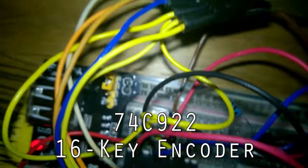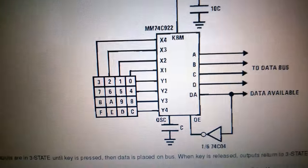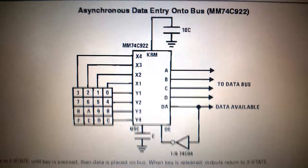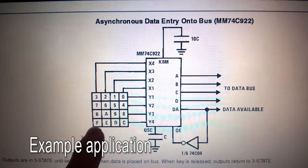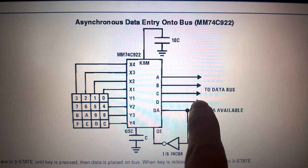The 74C922, it's a nice IC. You can see here a simple schematic. You go from hexadecimal input to 4-bit binary.